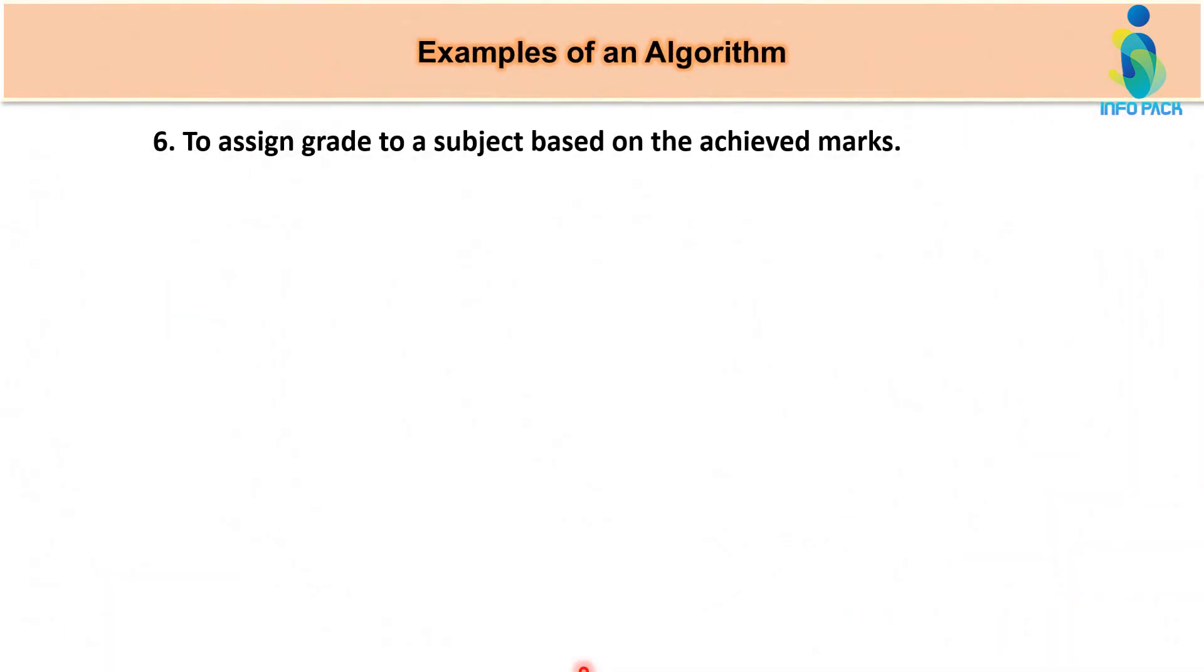Example number six is write an algorithm to assign grade to a subject based on achieved marks. Means students ne kuch marks achieve kiya hai. Unki base phe students ko kuch grade assign karna hai. Toh hum ne us ka algorithm write karna hai. So step one same like start. In step two you have to take input numbers that is obtained marks or total marks. Hum ne obtained marks or total marks donoh values ko input karwana hai.